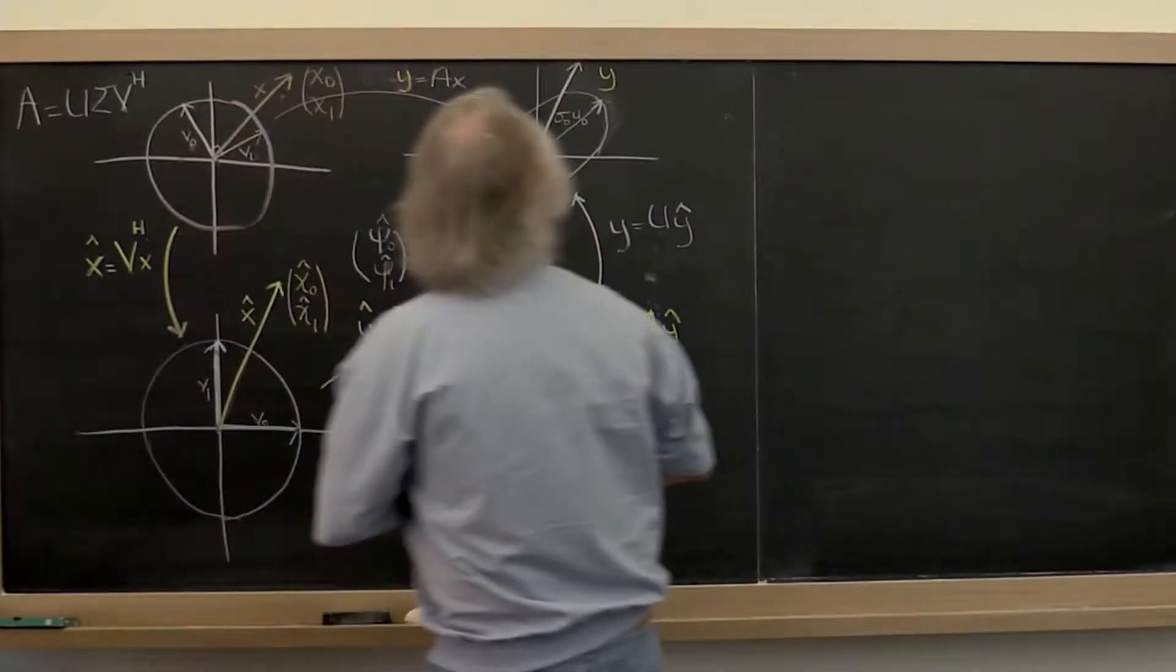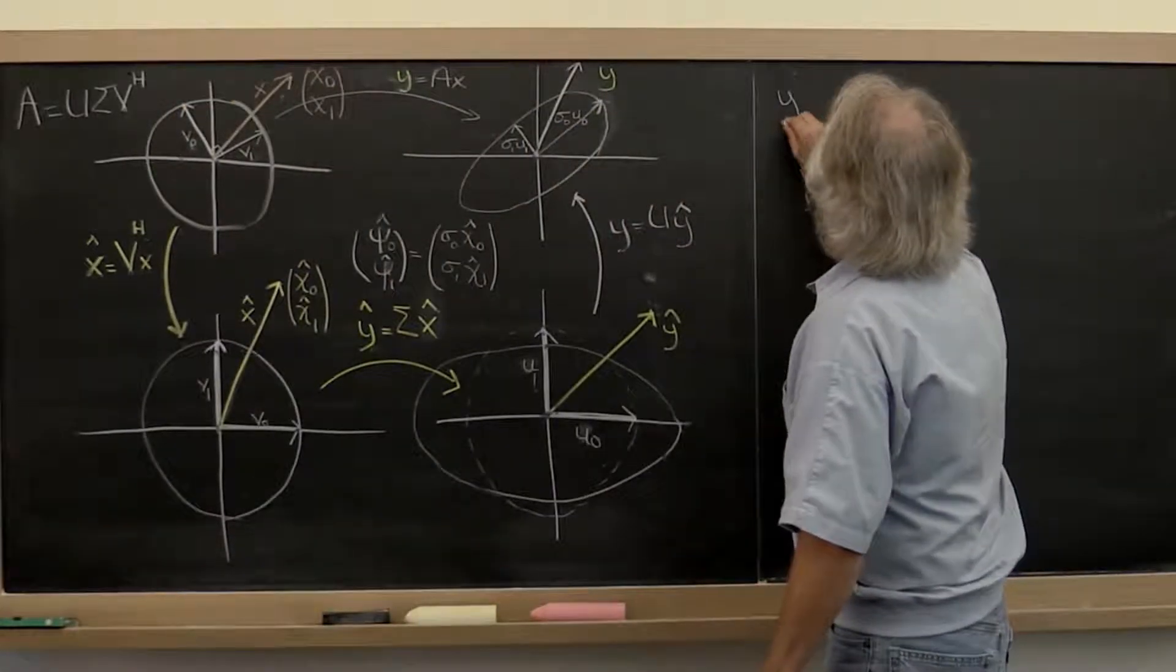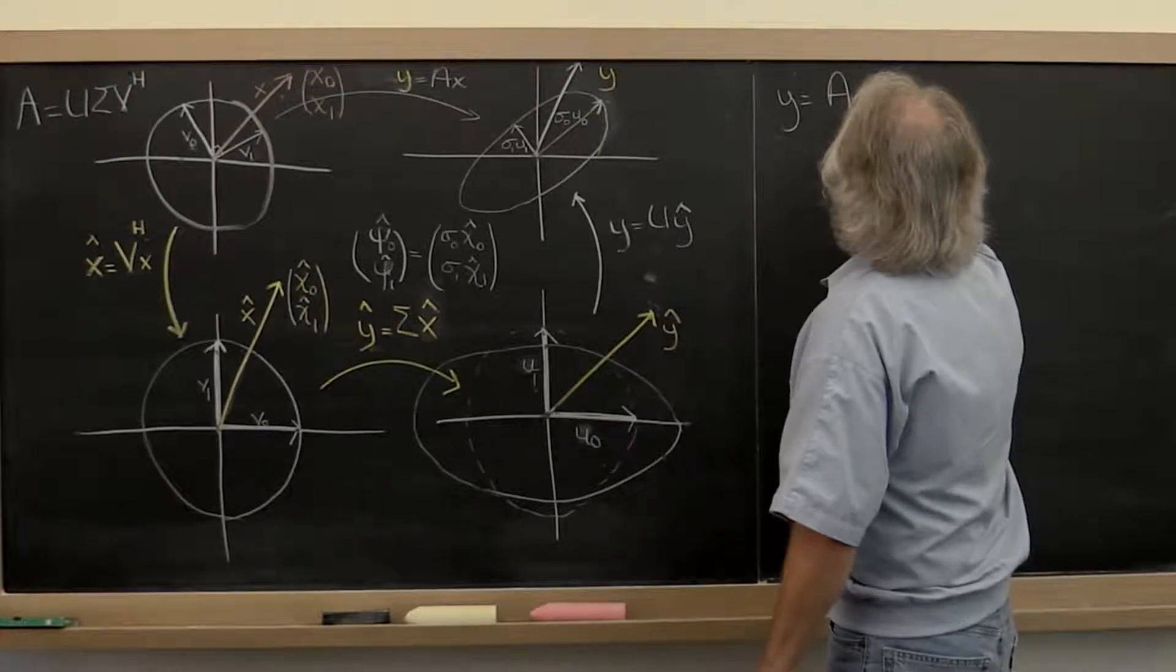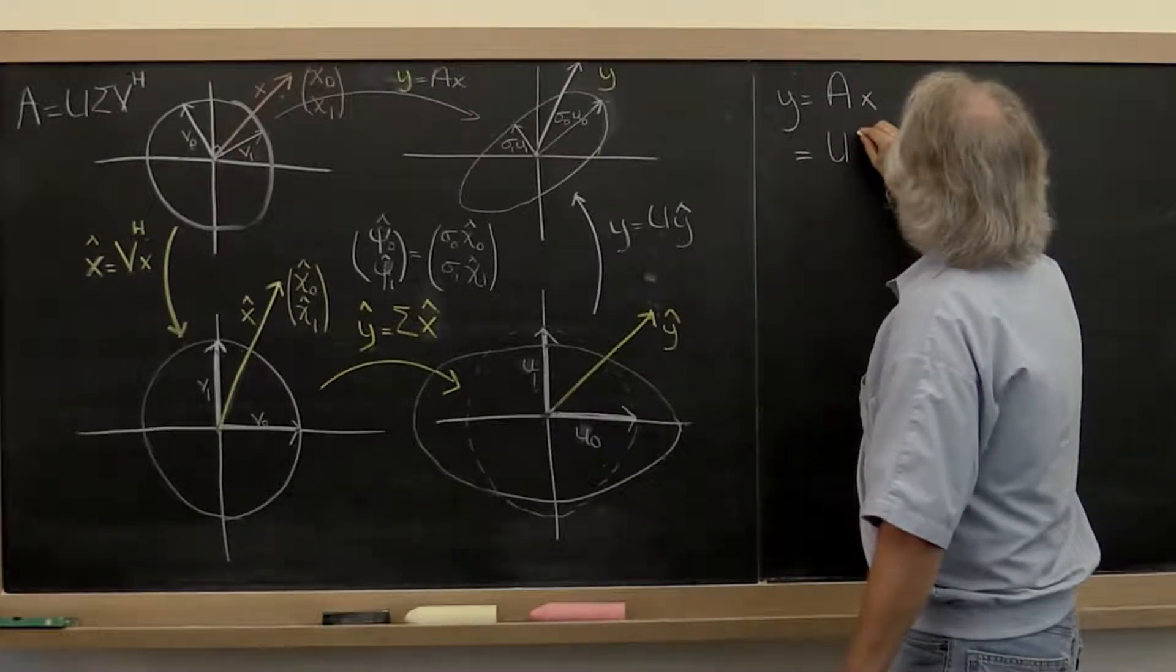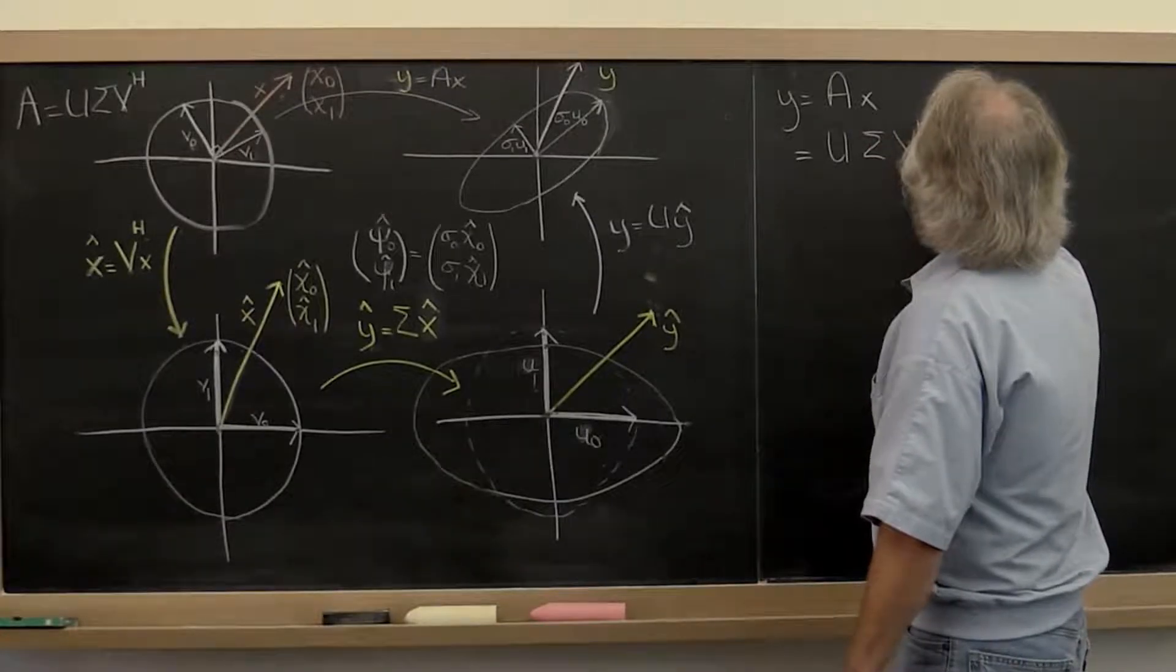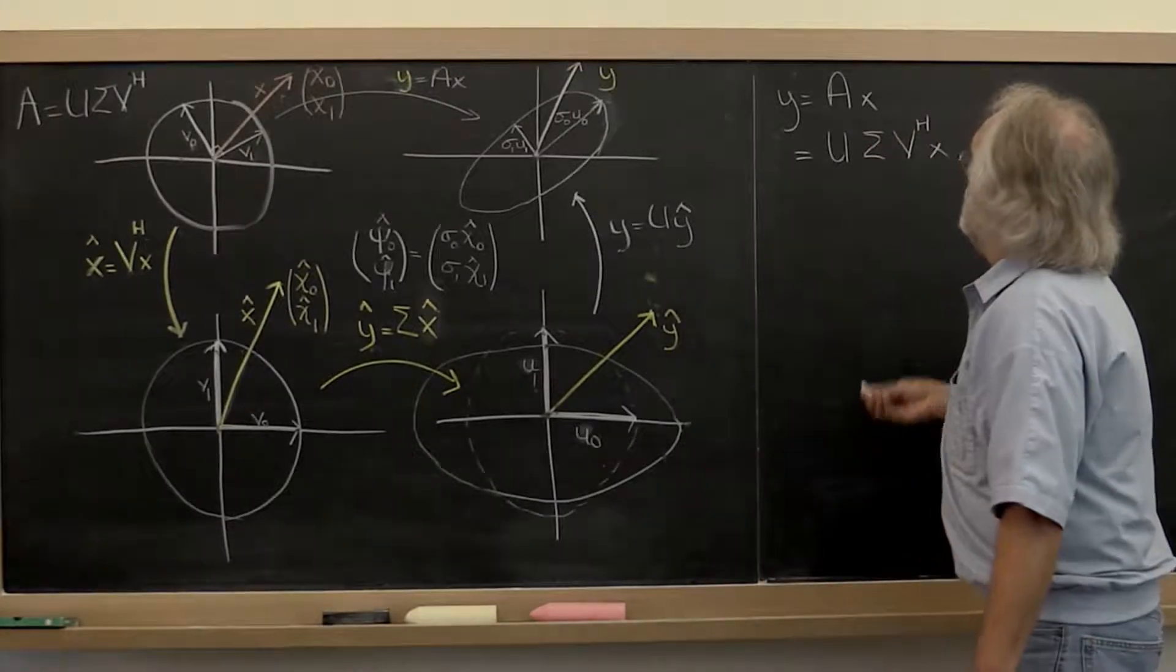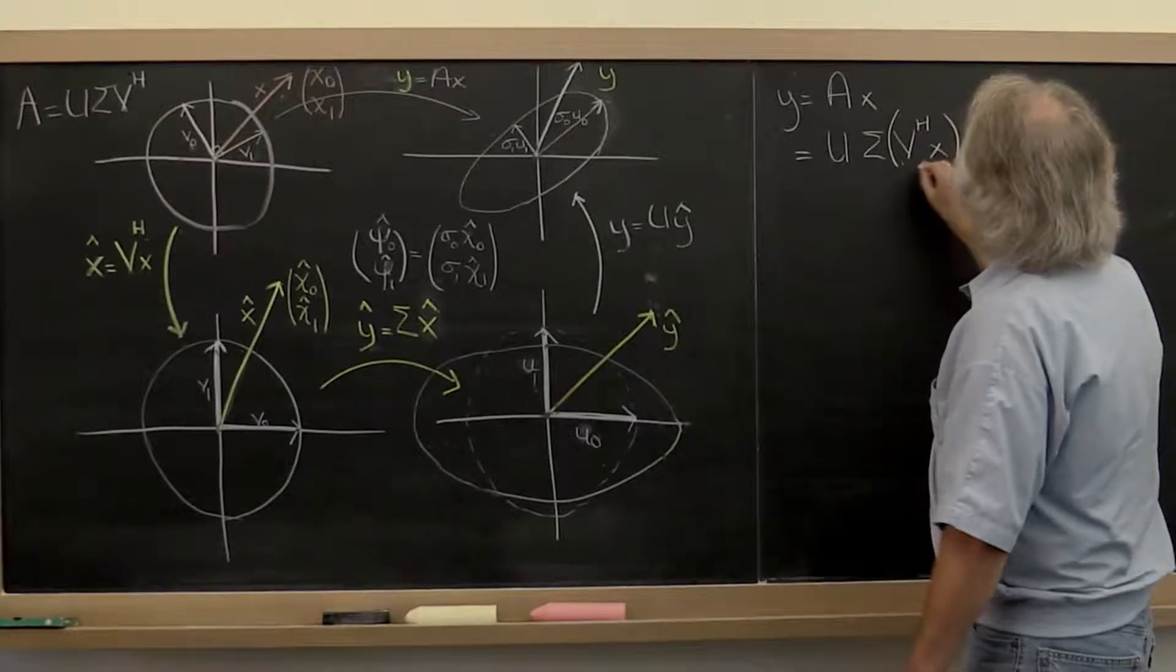Well, if we look at y equals A times x, that now becomes U times Sigma times V Hermitian transpose times x. And we can first look at this and say...